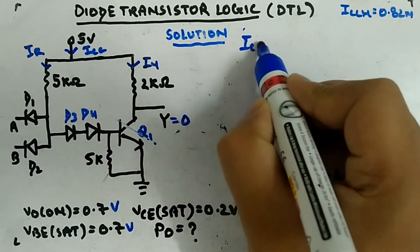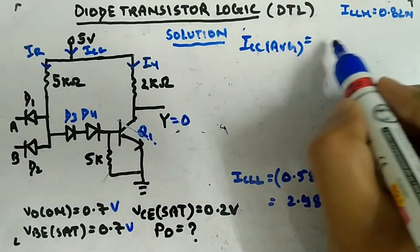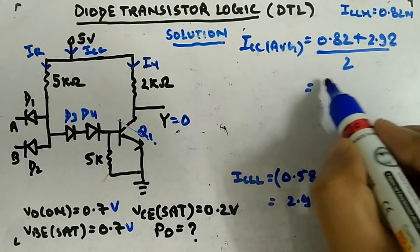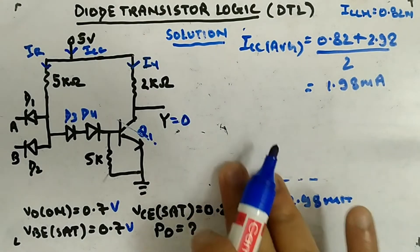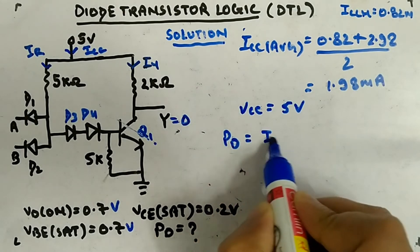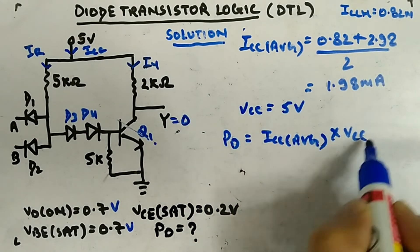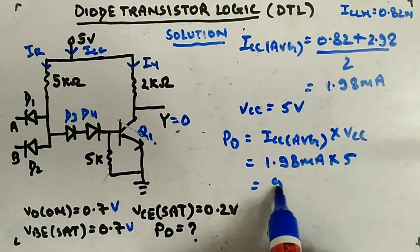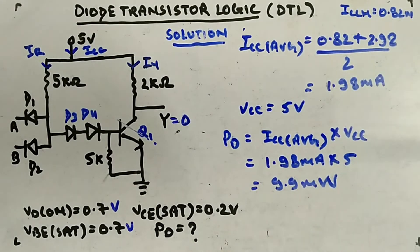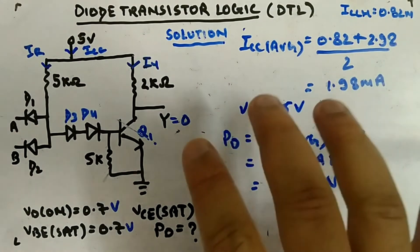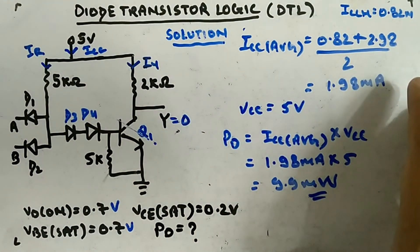ICC average equals (ICC_H plus ICC_L) divided by 2, which is (0.82 plus 2.98) divided by 2, giving 1.98 milli ampere. Power dissipation equals ICC average times VCC equals 1.98 milli ampere times 5 volt, which gives approximately 9.9 milli watt — typically 8 to 10 milli watt for diode transistor logic. This is your answer, and this is the approach to follow for this kind of circuit.